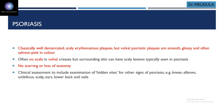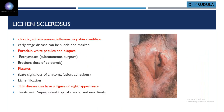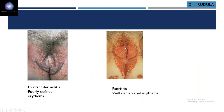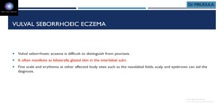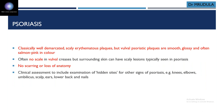Psoriasis is a well-demarcated scaly erythematous plaque. The differentiating point in the vulva is that there will be no scales in the vulval creases — because this is a moist area — but the surrounding skin will have scaly lesions. In the perianal region you can see scales, but in the vulval area there are none. The basic lesions of vulval psoriasis are well-demarcated erythematous glazed patches.